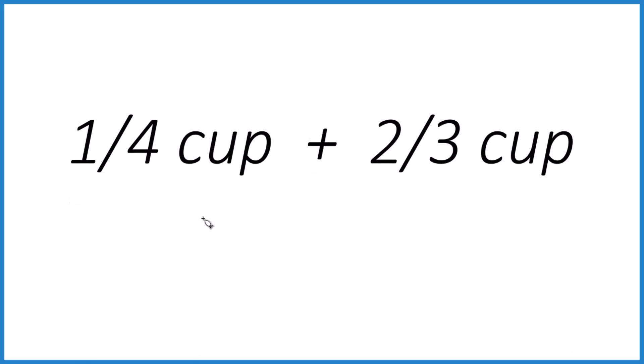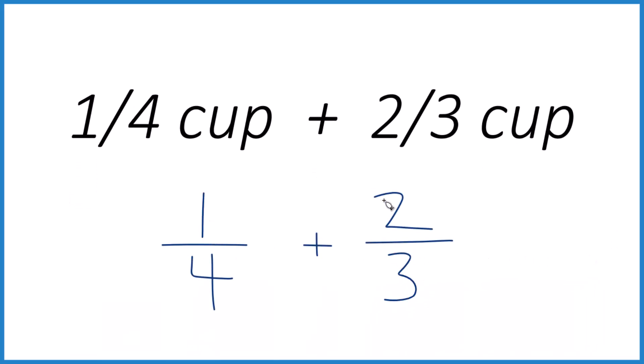Let's write one-fourth plus two-thirds first. And what we need to do when we add fractions, we need to get the denominator to be the same. Then we'll just add the numerators and we'll be done.